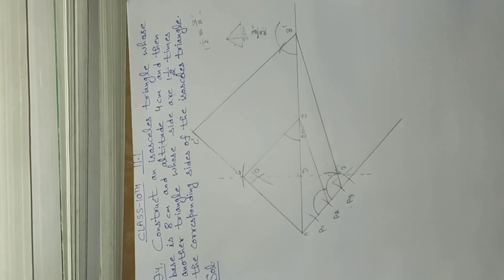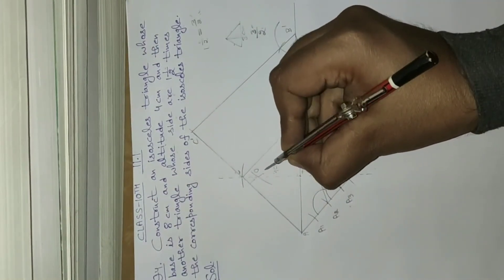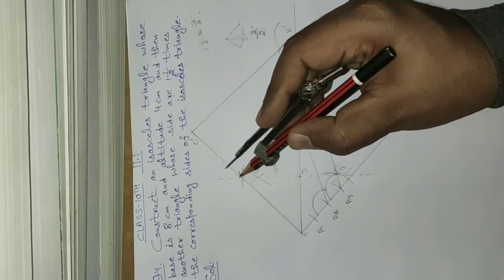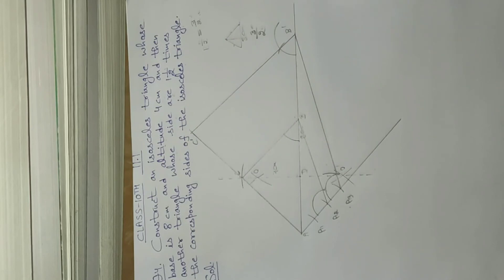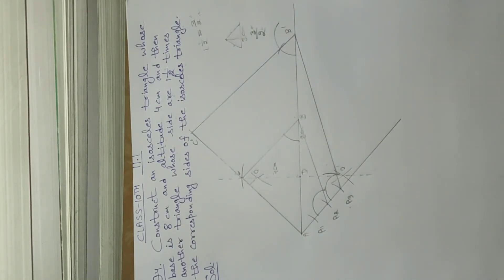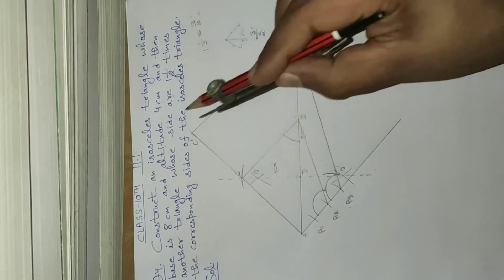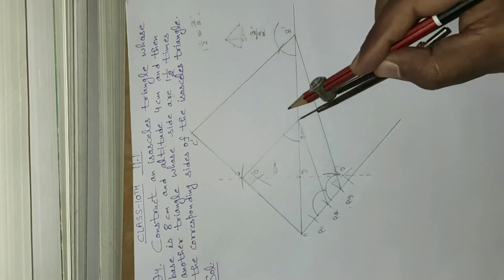Triangle ABC is our isosceles triangle with altitude CD of 4 centimeters. We have constructed another triangle AB'C' whose sides are 3 by 2 times the corresponding sides of the isosceles triangle ABC. So AB'C' is our new triangle whose sides are 3 by 2 times the corresponding sides of the isosceles triangle ABC.